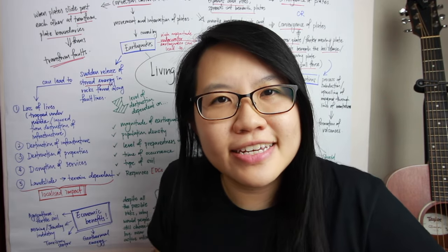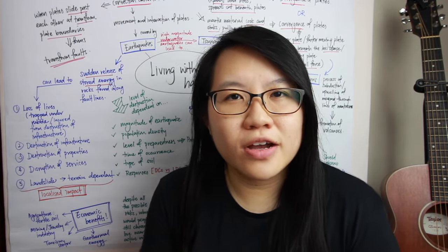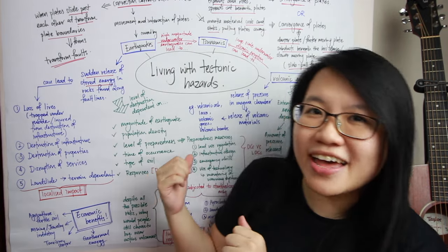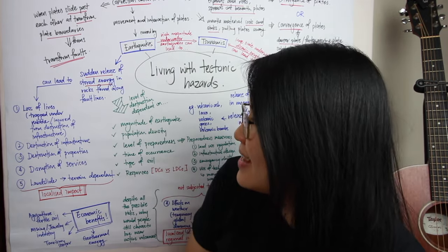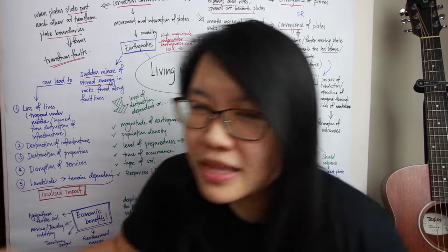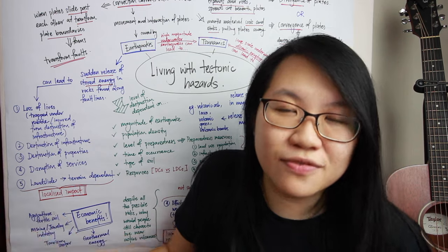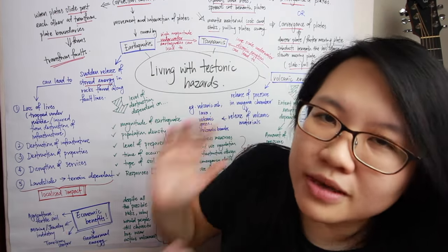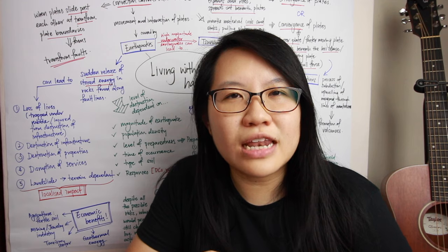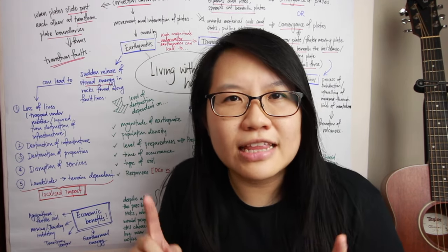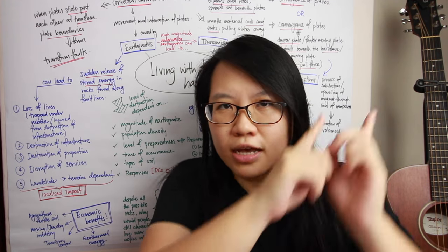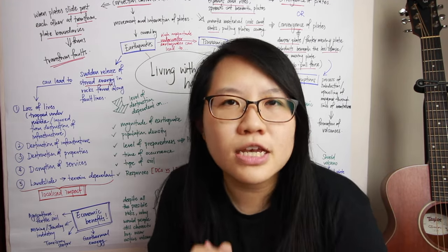For the chapter of plate tectonics, the overarching question is 'Living with tectonic hazards: risk or opportunity?' We're going to unpack this chapter. Behind me I have the entire mind map, though it is cut off at the top. I've omitted the part from gateway one talking about the formation of different landforms at plate boundaries — I'll make another video for that and put the link in the description.